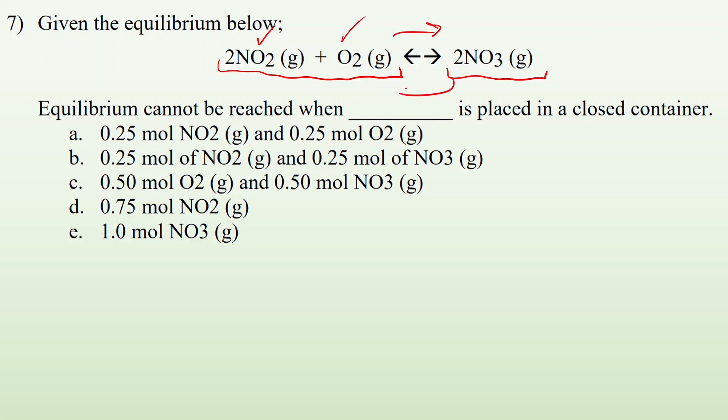So if I were to put them in a container, then I'd be able to do the forward reaction, which means I'd make NO3, which means I'd be able to do the reverse reaction. So this would be able to make equilibrium. What about N2 and NO3? Well, NO3 is my only product. So if I start with that, I'll be able to do the reverse process, which means I can make the forward process happen as well.